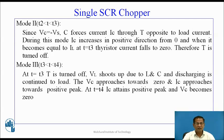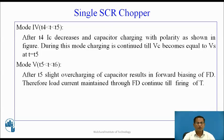Mode 3: t > T3, less than T4. At t=T3, T is turned off. Vl shoots up due to L and C, and discharging continues to the load. Vc approaches 0 and Ic approaches the positive peak. At t=T4, Ic attains positive peak and Vc becomes 0. Mode 4: t > T4, less than T5. After T4, capacitor current decreases and capacitor charges with polarity as shown. Charging continues till Vc becomes equal to Vs at t=T5. Mode 5: t > T5, less than T6. After T5, slight overcharging of capacitor results in forward biasing of the freewheeling diode. Therefore, load current is maintained through the freewheeling diode until firing of T.